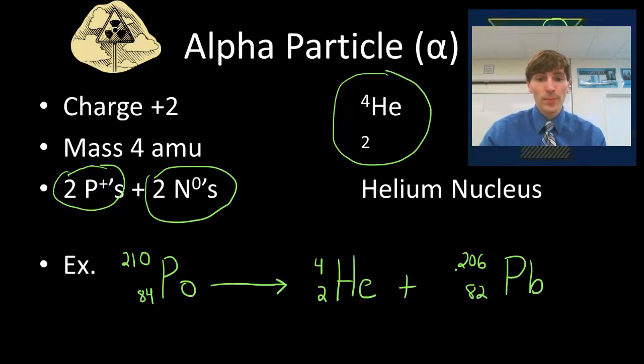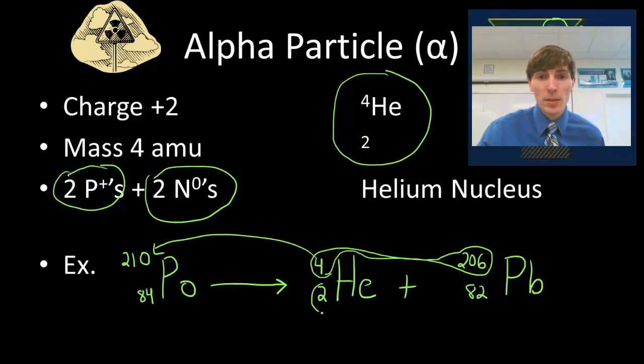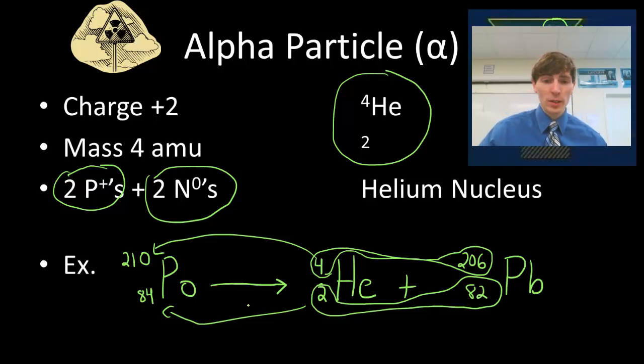A cool trick you can do is look at the conservation of matter. I have four AMU in my alpha particle, and I have 206 left over in my lead. I add those together, and that gives me the 210 I started with. Same thing here. I have 82 protons and two protons. Add them together, I get my 84. So that's kind of a check that you have the right stuff on the right-hand side. So there's alpha particle emission.